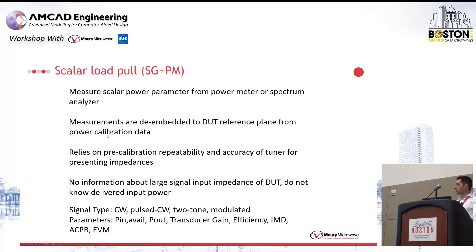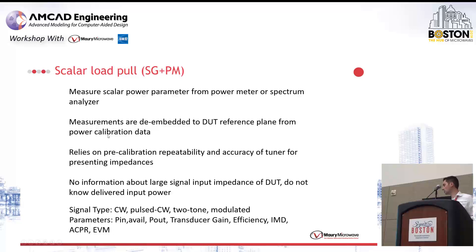You can do this type of load pull with many different signals: CW, pulse CW signals, two-tone, modulated signals. Depending on which type of instrument you use — power meter or spectrum analyzer — you can measure input available power and output power, transducer gain, and efficiency. If you use a spectrum analyzer, you can also get ACPR measurements or EVM measurements.